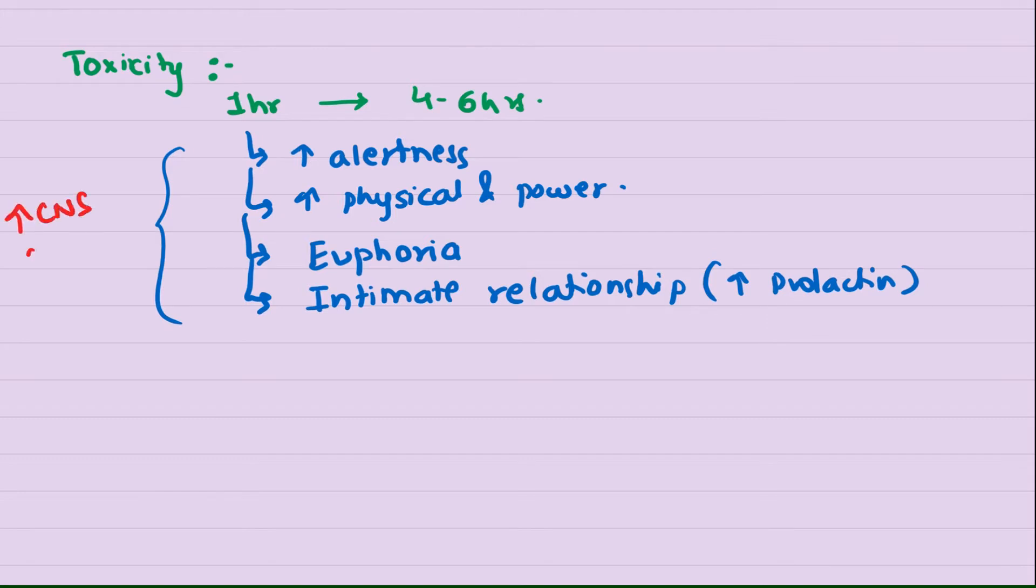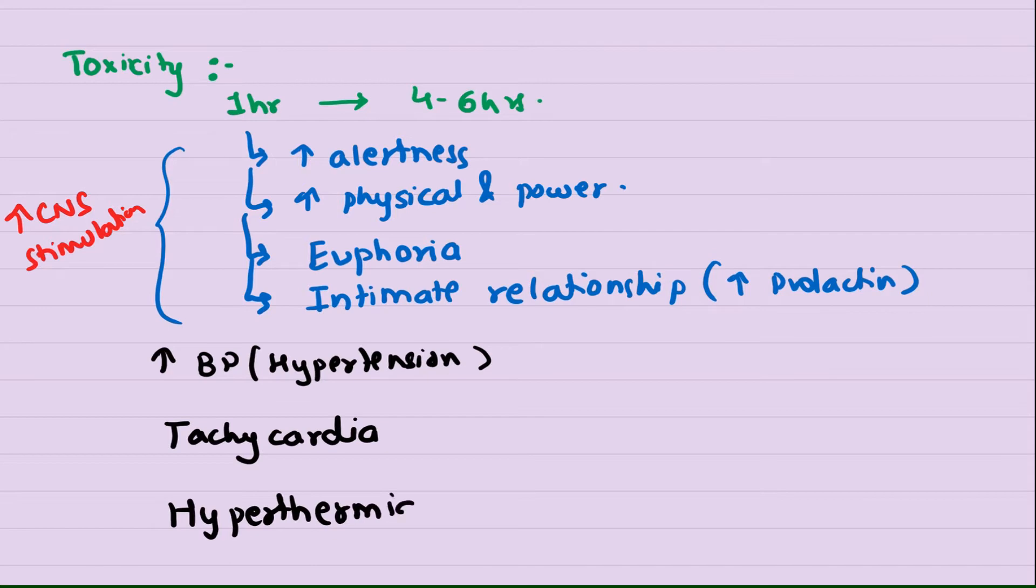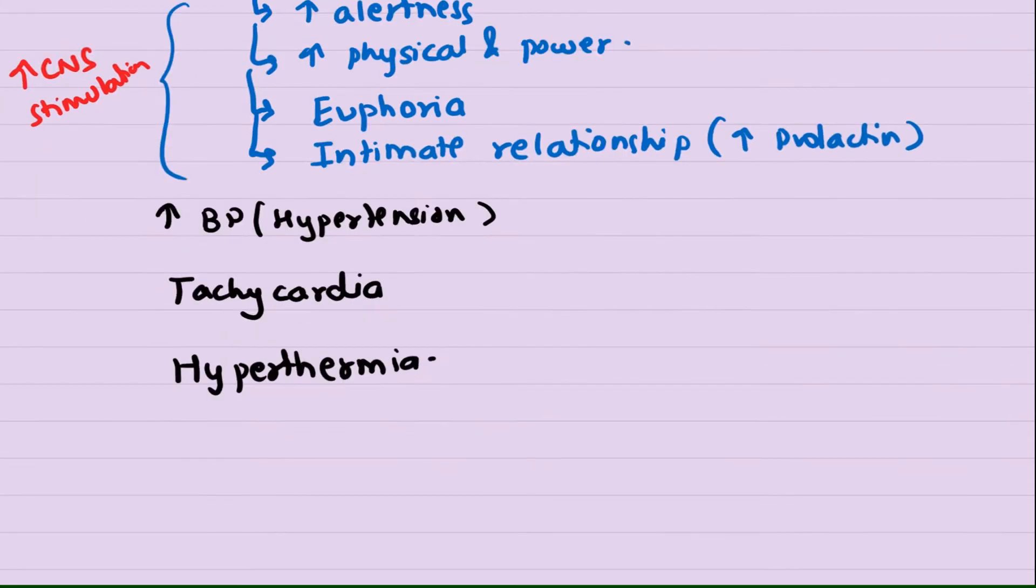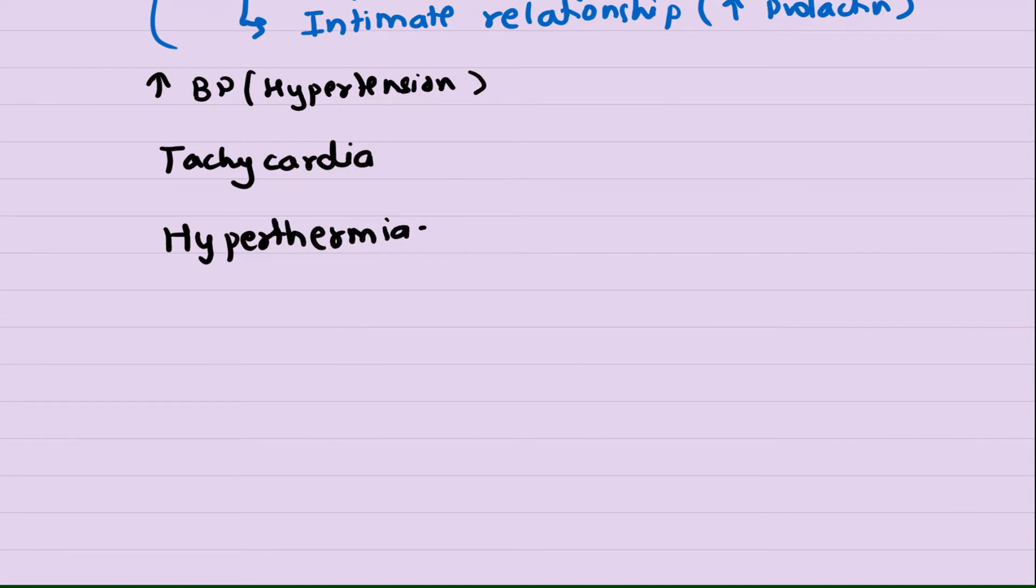All these effects are basically because of increased CNS stimulation by MDMA. Apart from this, MDMA causes an increase in blood pressure leading to hypertension. It also causes tachycardia. Apart from tachycardia, there is hyperthermia. Also, because of increased serotonin, there can be features of SIADH - syndrome of inappropriate ADH secretion - basically because of increase in serotonin level.